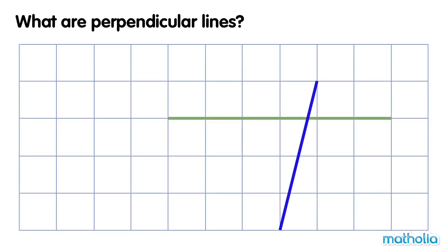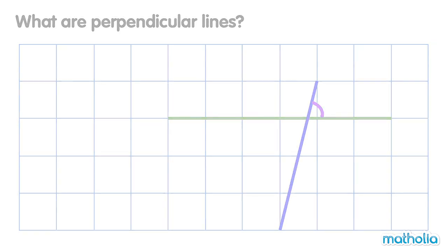Look at the lines on the grid. The angle they form is not a right angle. These lines are not perpendicular lines.